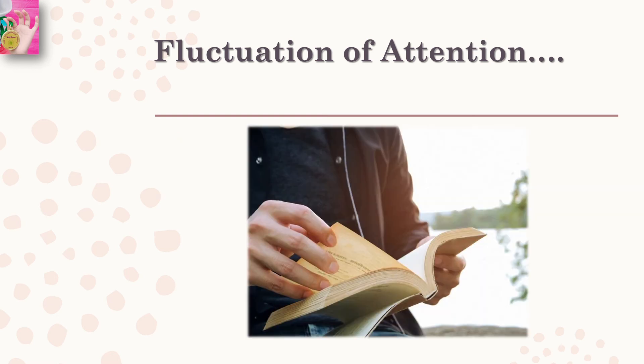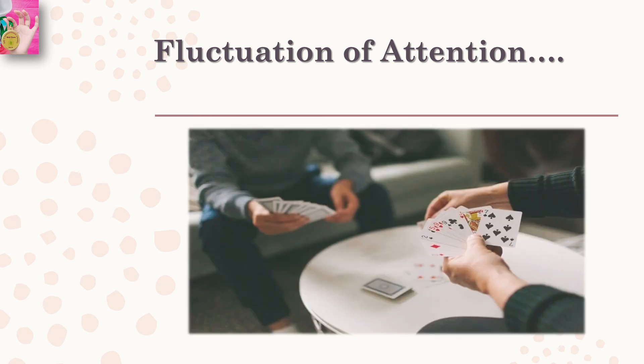For example, while reading a book, our attention shifts from word to word, sentence to sentence, paragraph to paragraph, and from page to page. Similarly, while playing card games, our attention shifts from one card to another. This is what we call shift of attention, because our attention shifts from one object or stimulus to another stimulus.